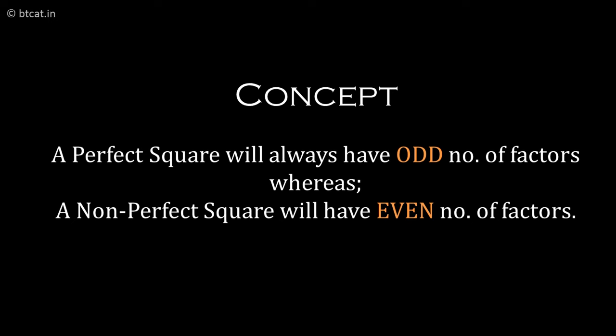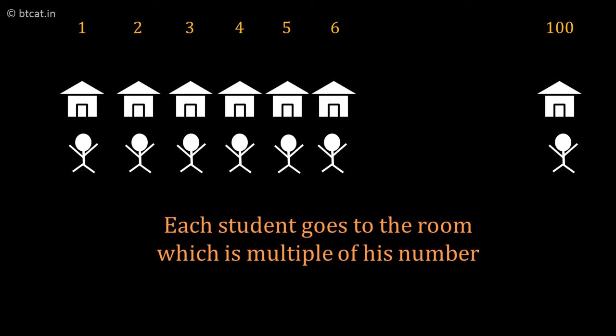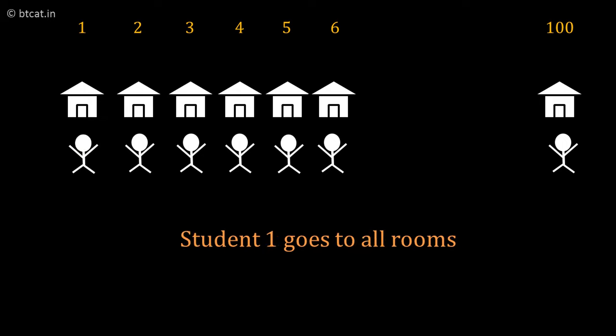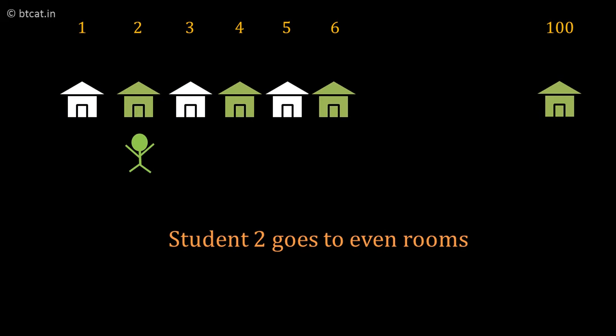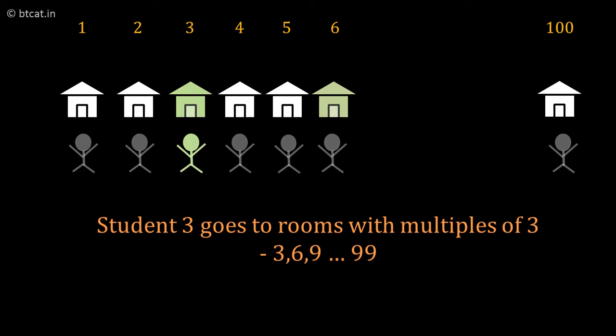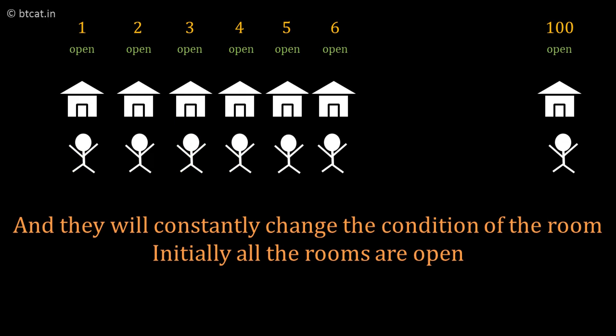Based on this concept, a very beautiful question can be asked: there are 100 rooms and 100 students. Each student goes to all the rooms which are multiples of their number — student one goes to all rooms, student two goes to all even-numbered rooms, student three goes to rooms 3, 6, 9, 12, and so on. They keep changing the condition of the room.